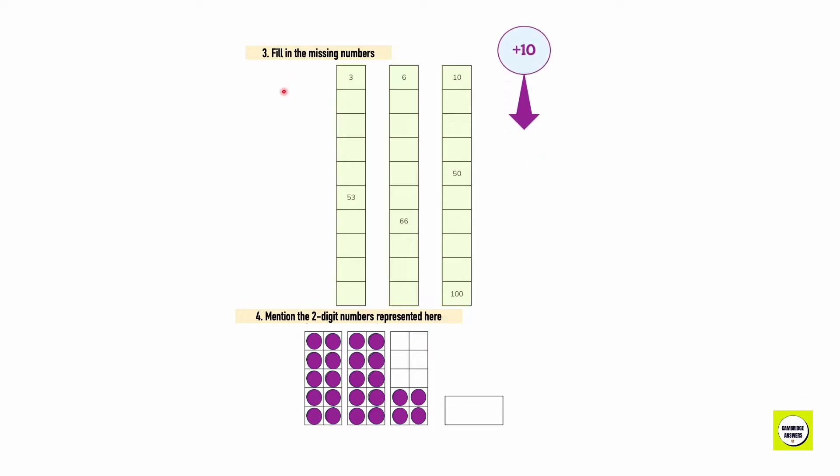Fill in the missing numbers. In order for us to move down we must add 10. 3, 13, 23, 33, 43, 53, 63, 73, 83, 93. 6 plus 10 is 16, 26, 36, 46, 56, 66, 76, 86 and 96.